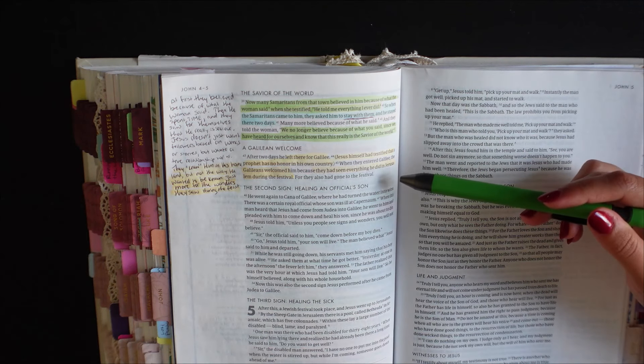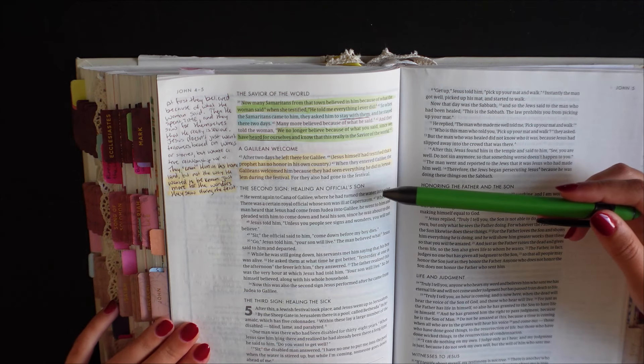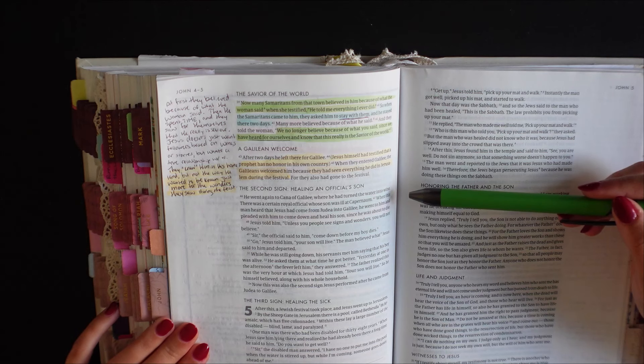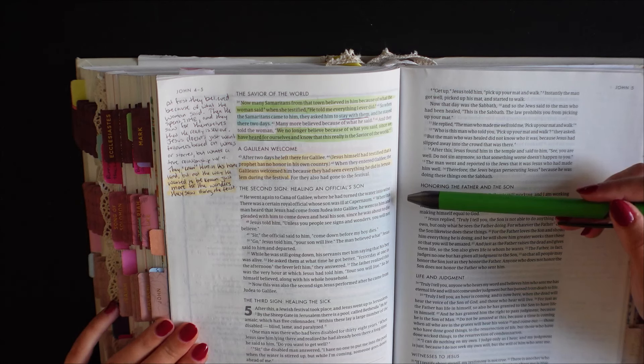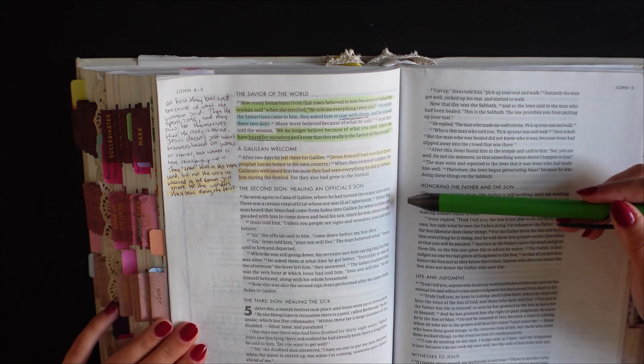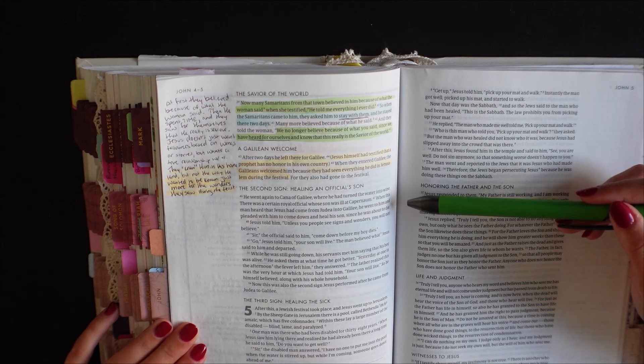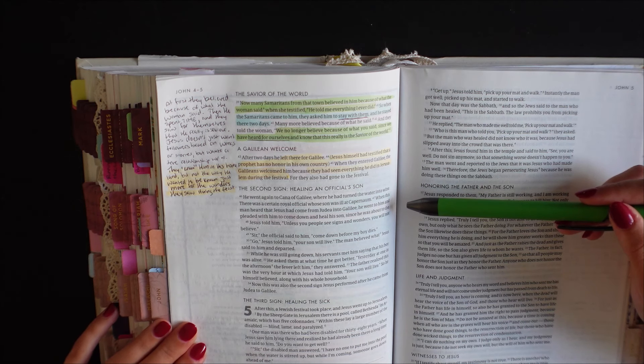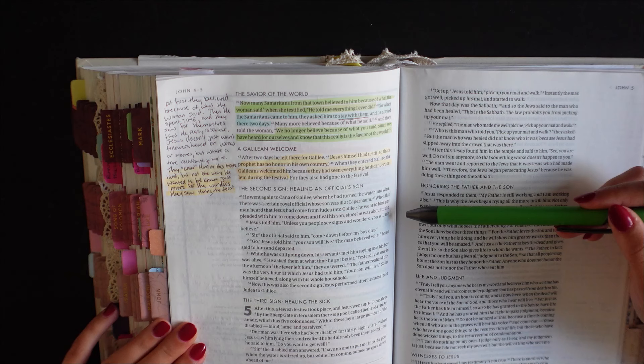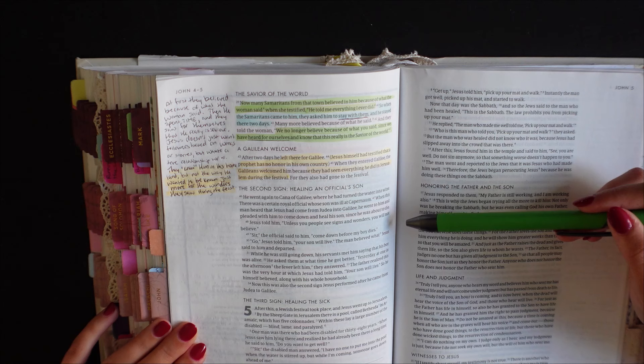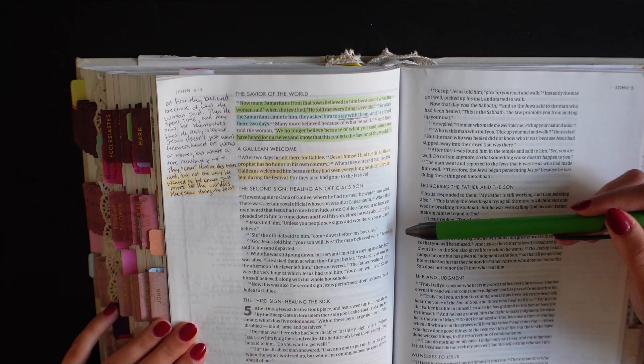The second sign, healing an official's son. He went again to Cana of Galilee, where he had turned the water into wine. There was a certain royal official whose son was ill at Capernaum. When this man heard that Jesus had come from Judea into Galilee, he went to him and pleaded with him to come down and heal his son, since he was about to die. Jesus told him, unless you people see signs and wonders, you will not believe. Sir, the official said to him, come down before my boy dies. Go, Jesus told him, your son will live. The man believed what Jesus said to him and departed.